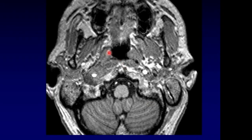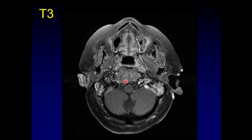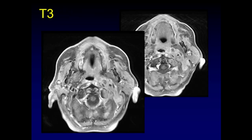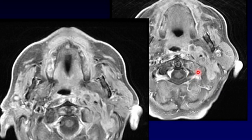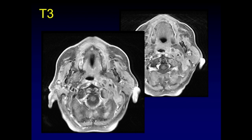For T3 disease, posterior invasion involving the prevertebral muscles and extending further to involve the clivus renders it T3 — clivus involvement is one of the bones that upgrades staging. Other bones can also be affected: abnormal enhancement and invasion involving the occipital condyles, lateral mass, and transverse process of C1 represents spinal involvement, another bone that renders the primary tumor T3.